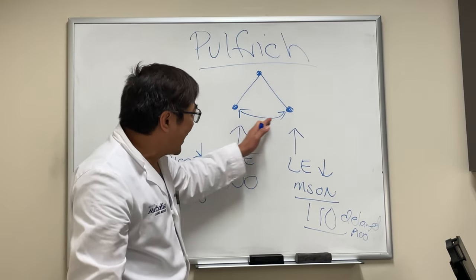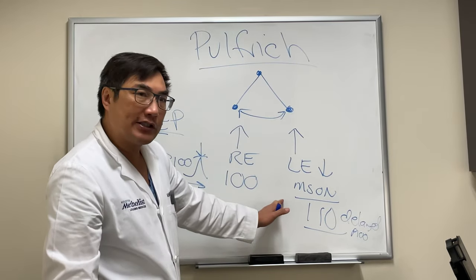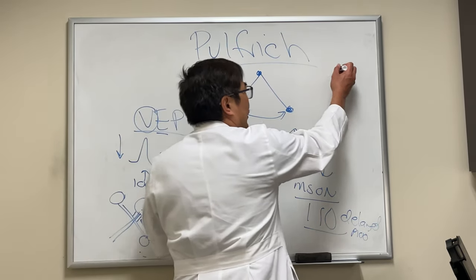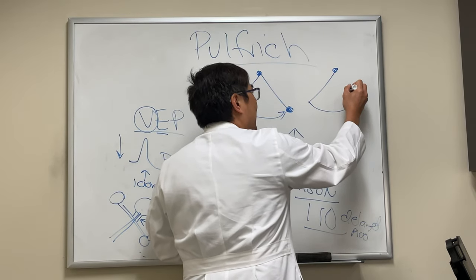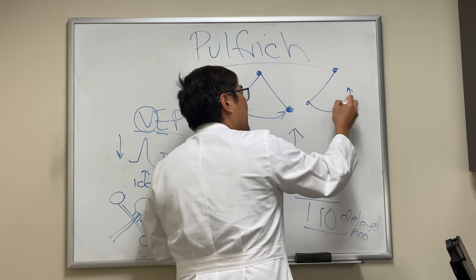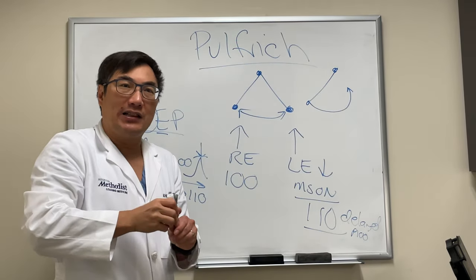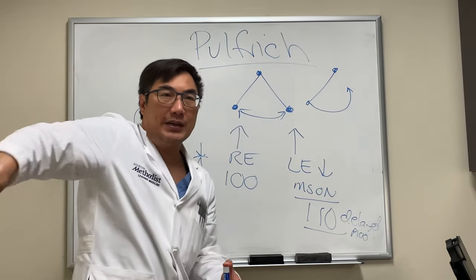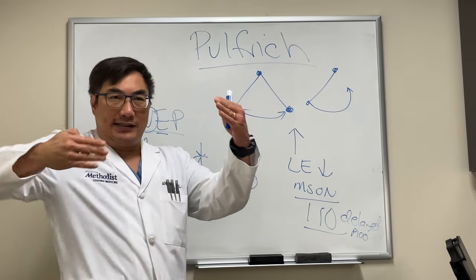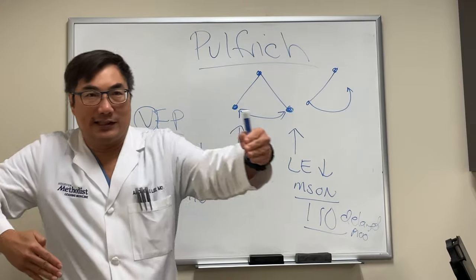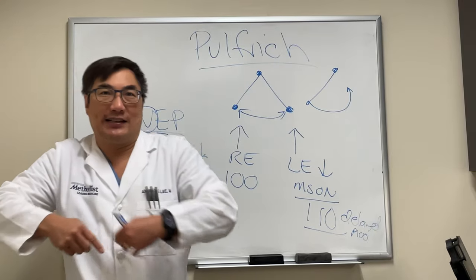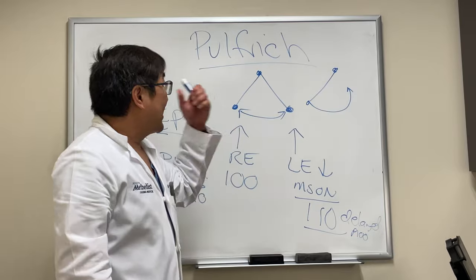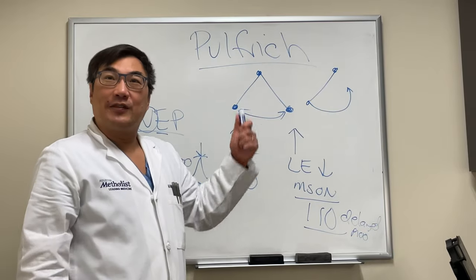Instead of the right eye and the left eye seeing the same thing, there's a delay in the signal to one eye. So the swinging pendulum will appear to make a circular course — it'll look like it's going in a circle, because one eye is seeing it in the correct plane and the other is slightly delayed. And that is the Pulfrick phenomenon.